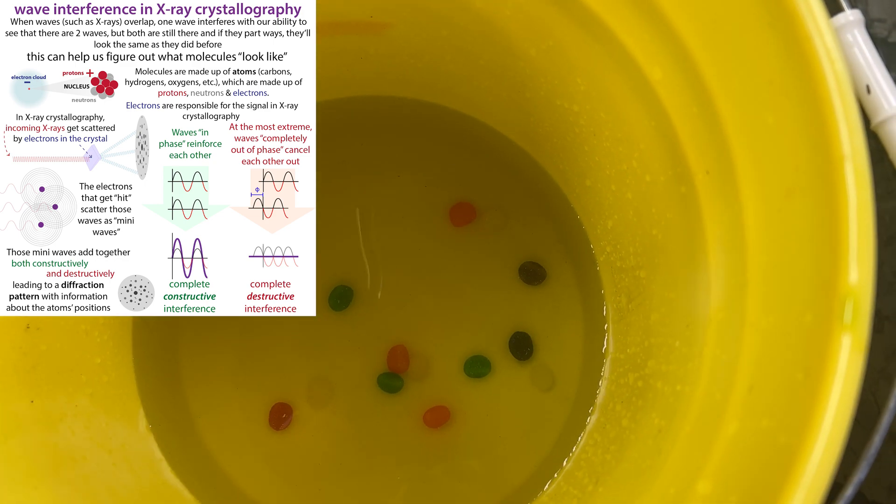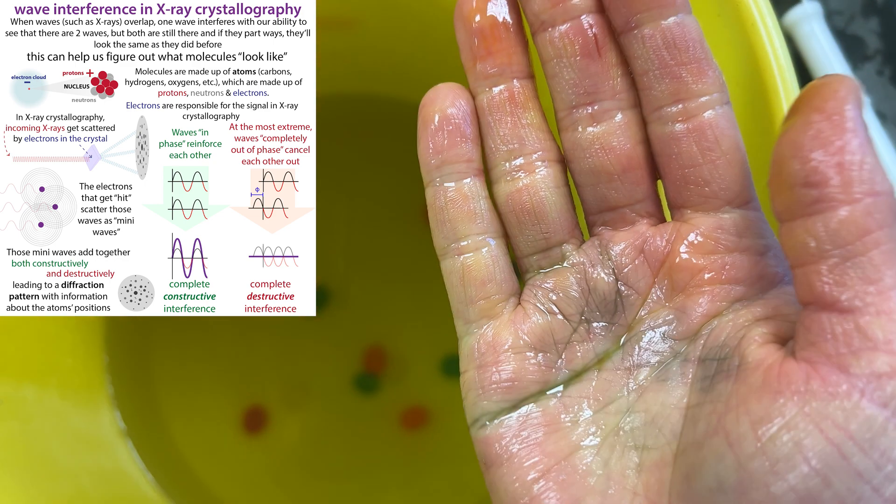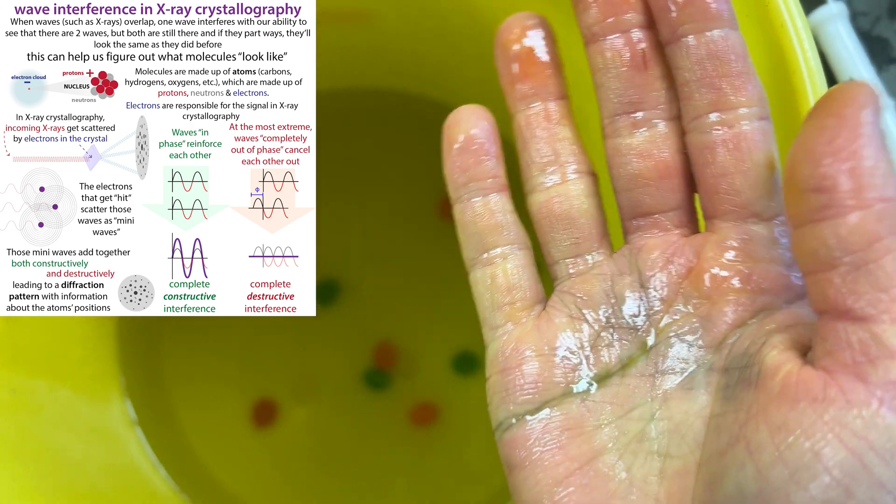And then what scientists do is they use a detector to figure out when that mega wave, when those ripples are hitting the detector.